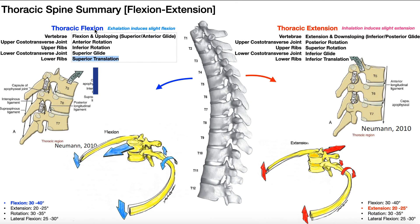So that's thoracic flexion. A couple of things about this movement: the typical passive range of motion is about 30 to 40 degrees in the T-spine. And exhalation induces slight flexion. I want to clarify: when you breathe out, when you exhale, there's a little bit of flexion induced in the thoracic spine. Flexion does not cause exhalation — breathing mechanics have to do with contraction and relaxation of the diaphragm and other muscles. But if you exhale, it will induce a slight amount of thoracic flexion.